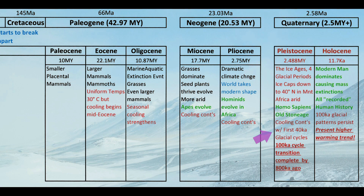In the Pleistocene, we see these ice ages or glacial cycles continuing, forming a pattern every 40,000 years or so at the beginning of the Pleistocene and lasting well into it. Somewhere near the end of the Pleistocene, the 40,000-year glacial cycles transitioned to 100,000-year cycles. This transition was pretty complete by about 800,000 years ago.